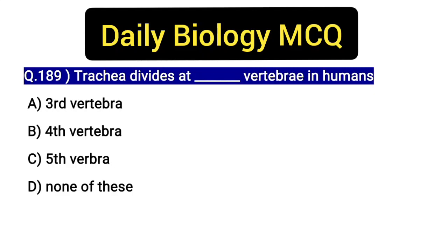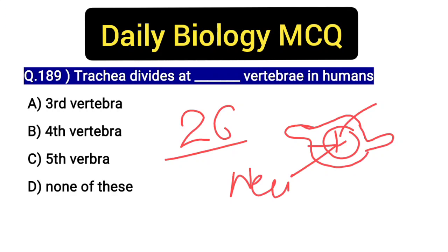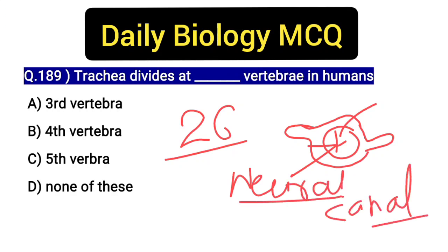If you talk about the total number of bones in the vertebral column, according to NCERT there are 26 bones. Each vertebra, when you look at the vertebral column structure, has a hollow cavity in the central portion. The spinal cord passes through this hollow cavity. This central portion is called the Neural canal. These are all very important questions.